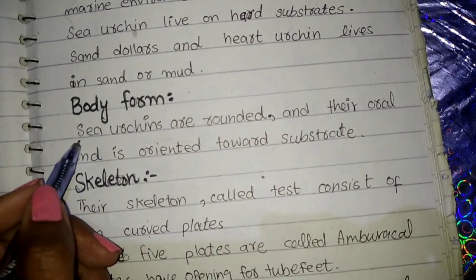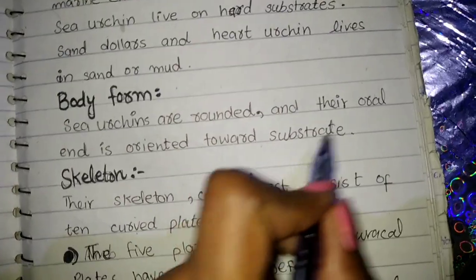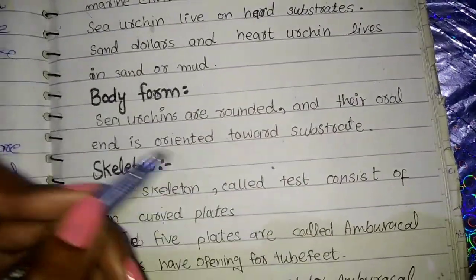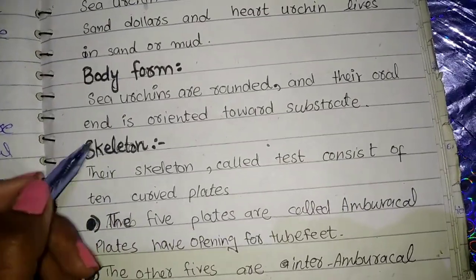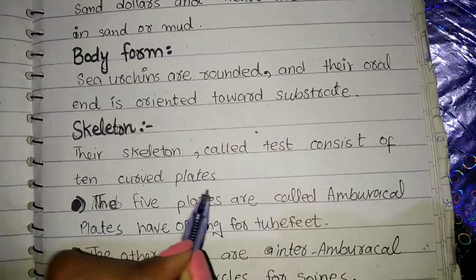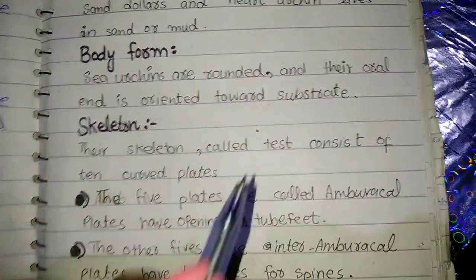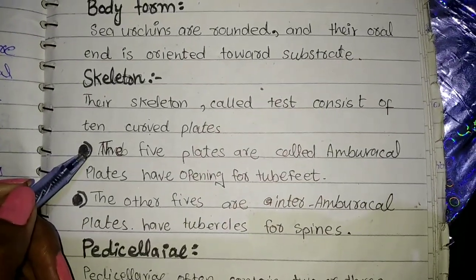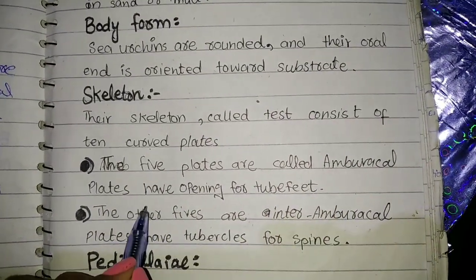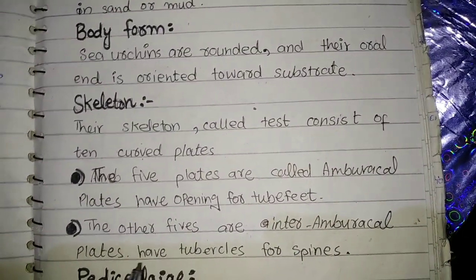Sea urchins are rounded and the oral side, which is the mouth, is oriented towards the substrate. The skeleton, called the test, consists of ten curved plates. Five plates are called ambulacral plates, which have openings for tube feet. The other five are inter-ambulacral plates, which have tubercles for spines.